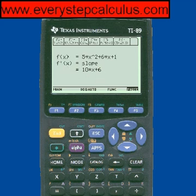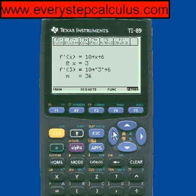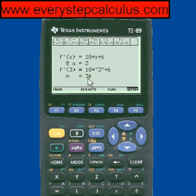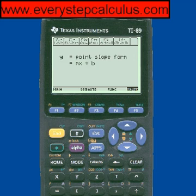We get the original function, we find the derivative of it — the slope — which equals 10x plus 6. At x equals 3, our chosen x value, here's the derivative. The derivative at 3 is 10 times 3 plus 6, and there's 36, which is the slope, m.